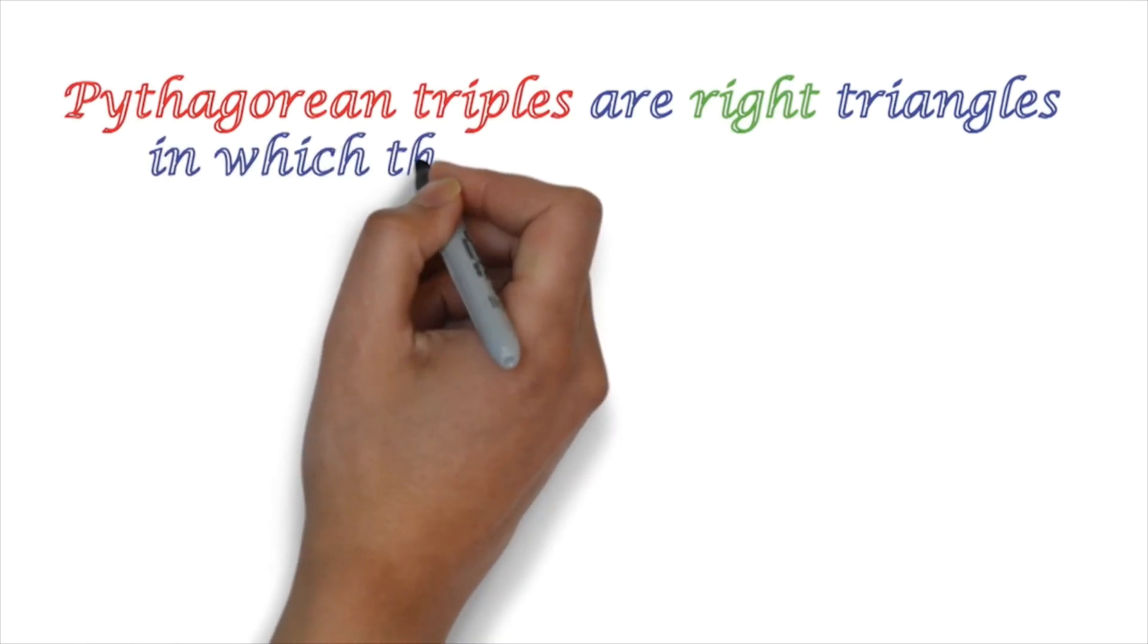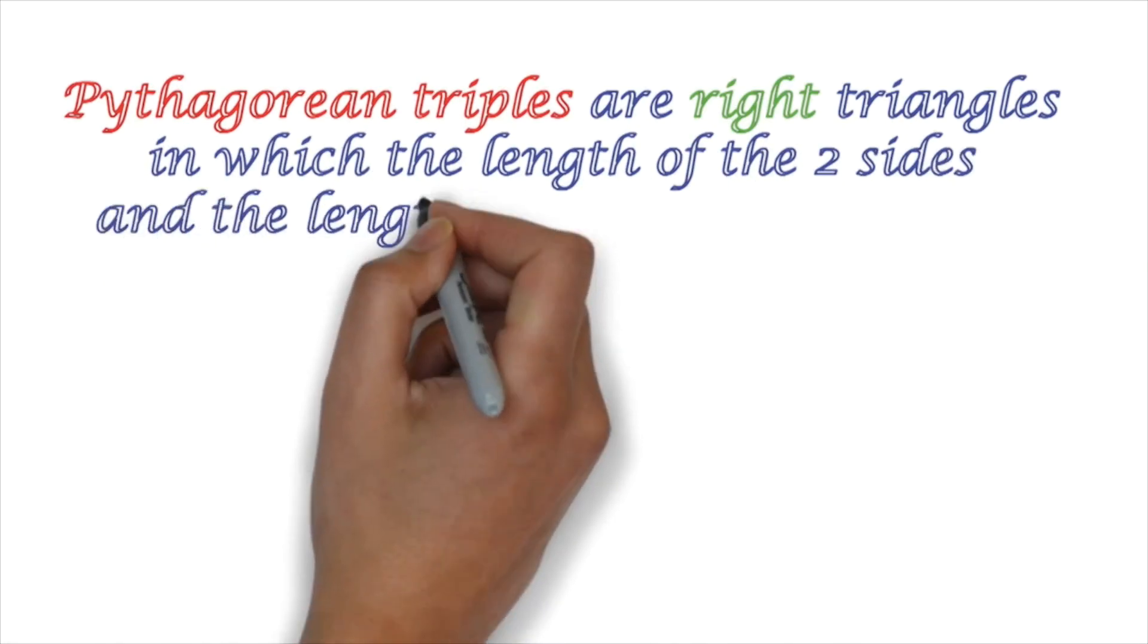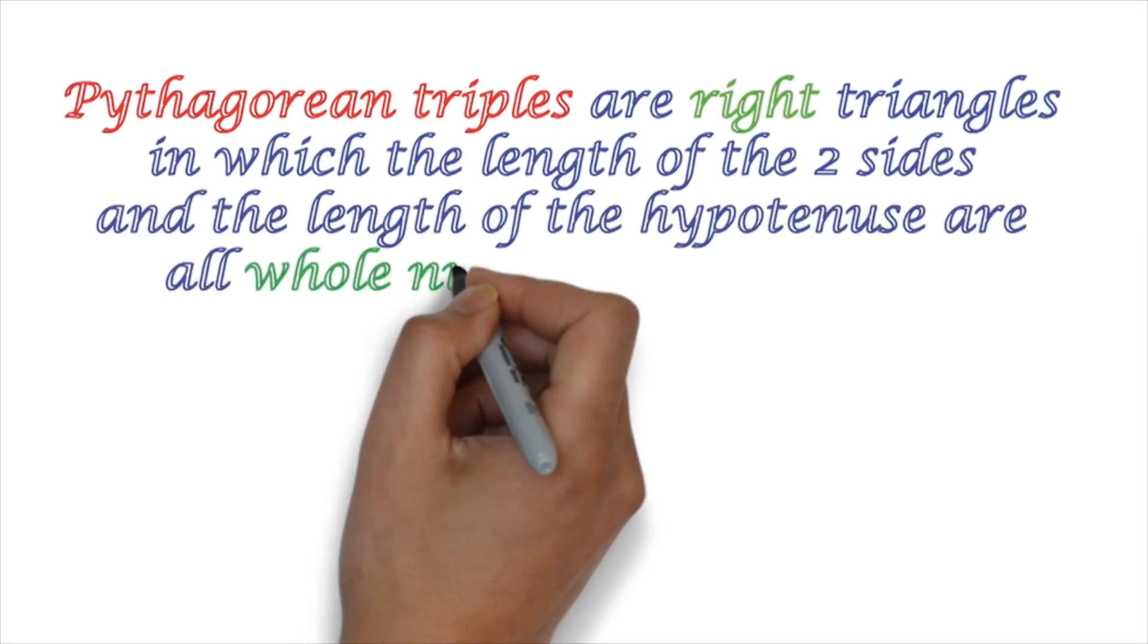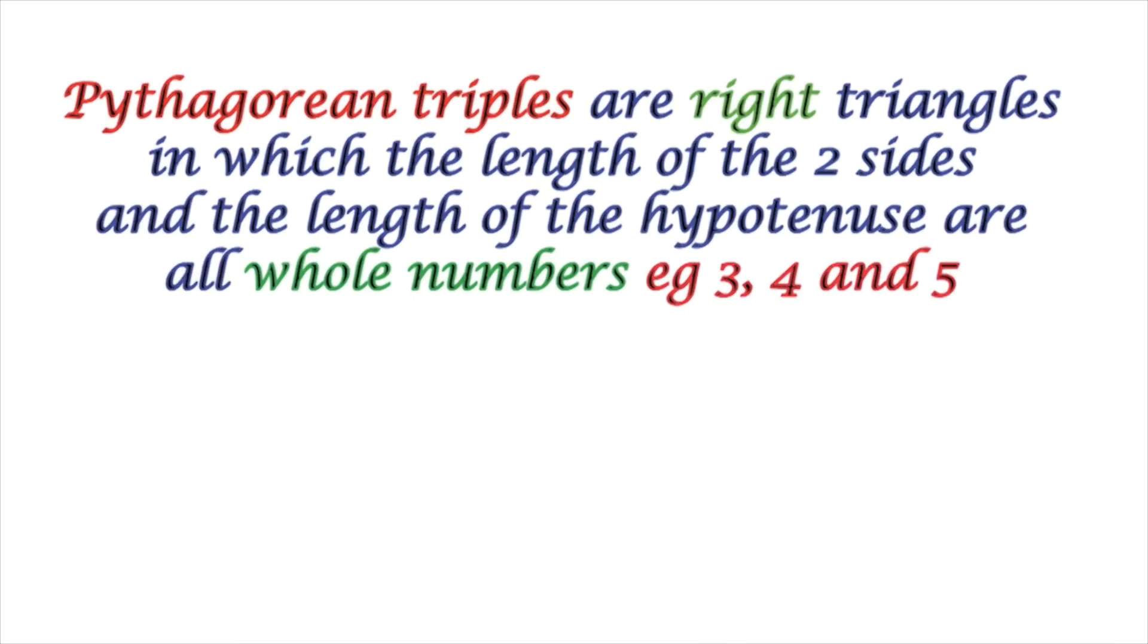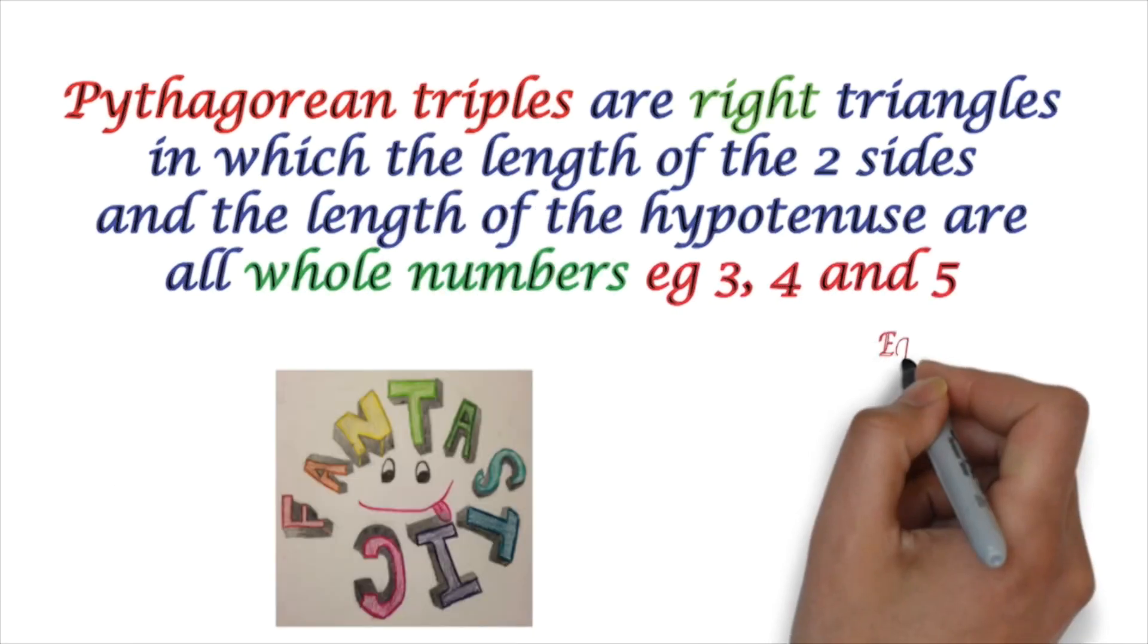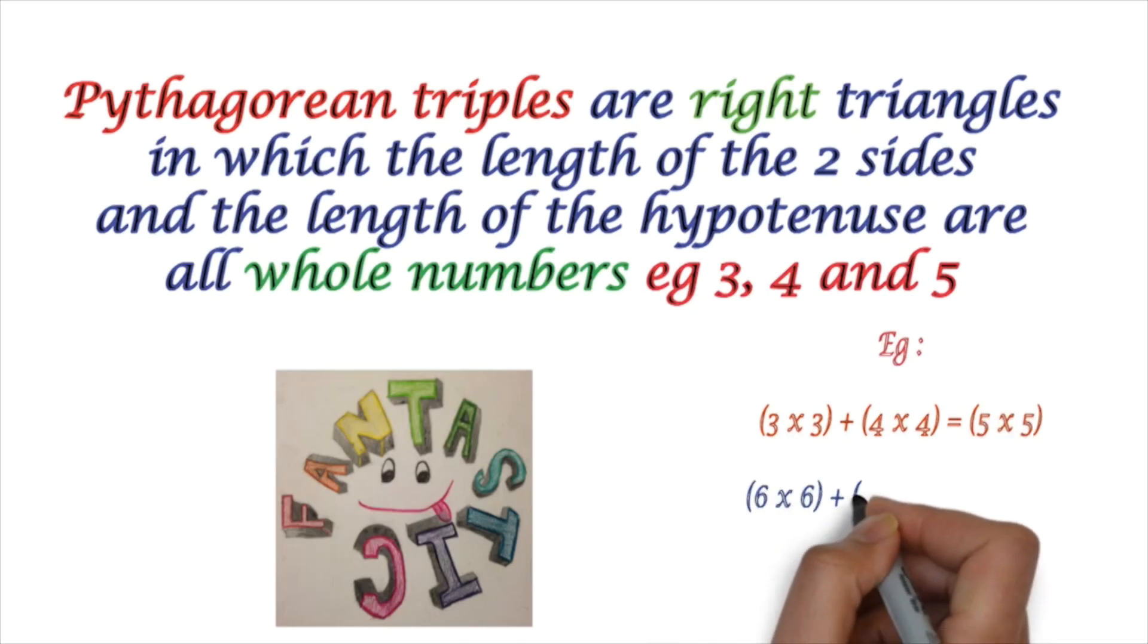So Pythagorean triples are right triangles in which the length of the two sides and the length of the hypotenuse are all whole numbers. So 3, 4, and 5 are called Pythagorean triples. So, in fact, 6, 8, and 10, 12, 16, and 20.